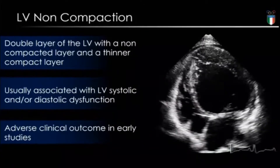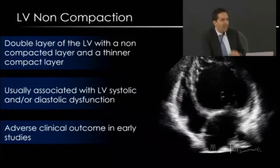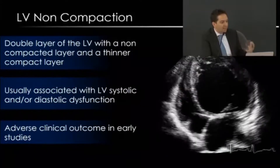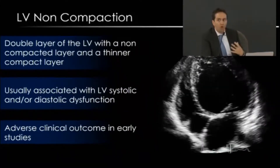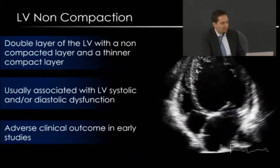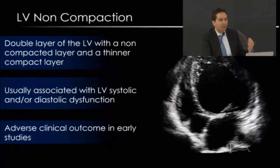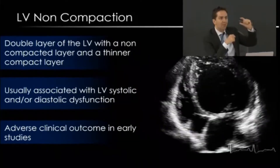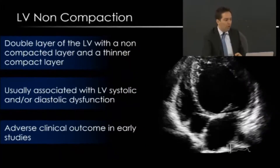Left ventricular non-compaction is a cardiomyopathy characterized by a specific phenotypic appearance: a double layer of the left ventricle with a non-compacted or spongy endocardial layer that looks like a sponge, and a thinner epicardial compact layer. So we have two different layers — one external which is compact and one internal which is spongy or non-compact.